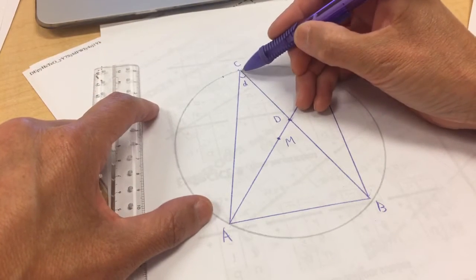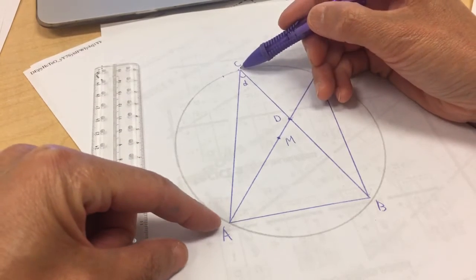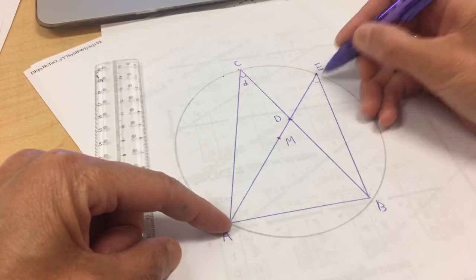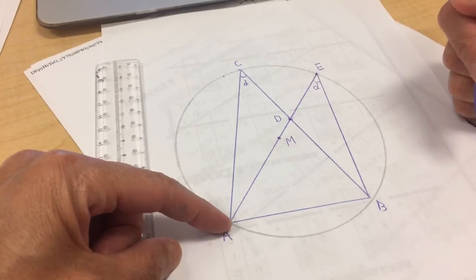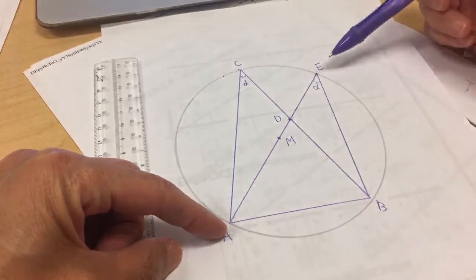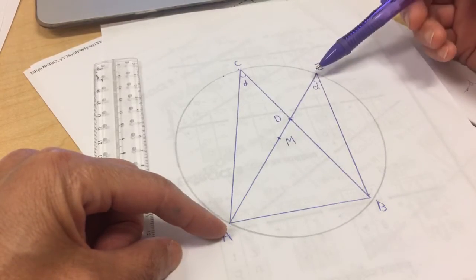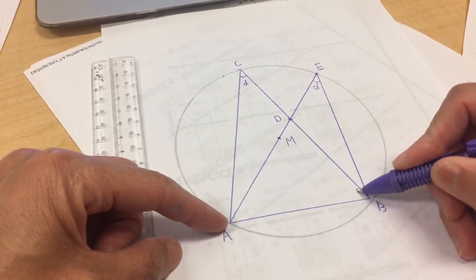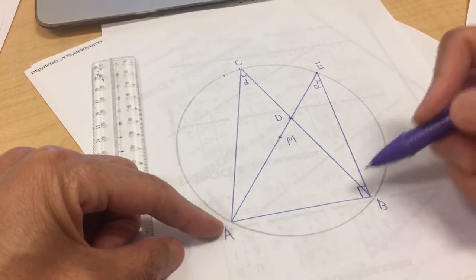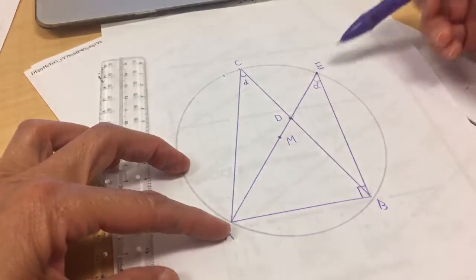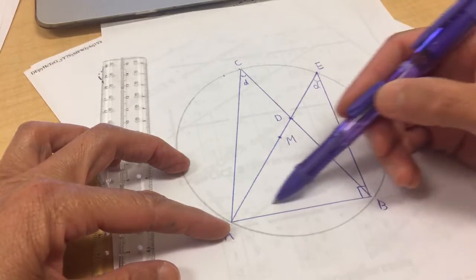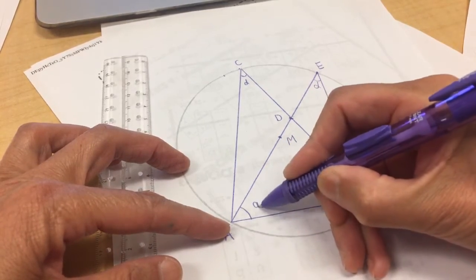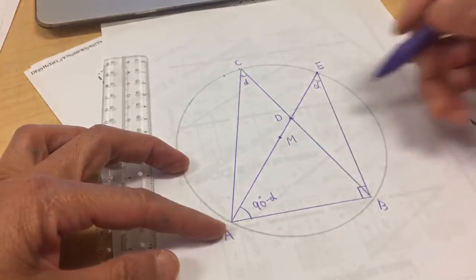So first we know angle C is alpha. Angle C and angle E both are sitting on the same arc, so the angle of E is alpha also. And we know AE is diameter, so the angle of ABE is half of the arc, which is 90 degrees. So this is 90 degrees. So in triangle AEB we know one 90 degrees, we know one alpha, then we know this angle is 90 minus alpha.